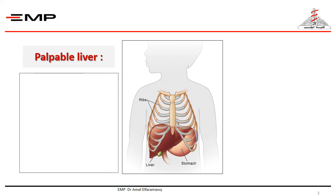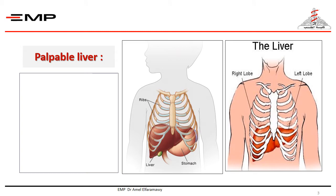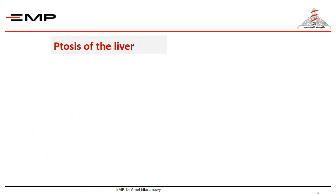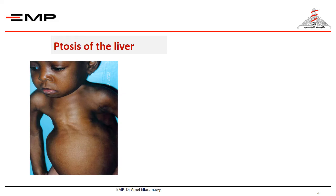Palpable liver means the degree of extension of the liver below the right costal margin. In general, it is normal to palpate the liver at 3.5 cm in neonates and 2 cm in children below the right costal margin. It is soft, smooth, and non-tender. The presence of a palpable liver doesn't always indicate hepatomegaly. Sometimes there is ptosis of the liver, which is displacement of the liver downward due to deformity of the chest and hypotonia of the muscles, as in case of rickets.